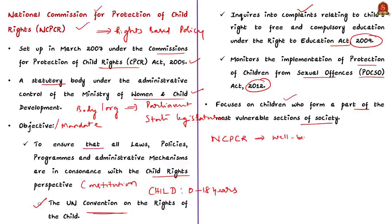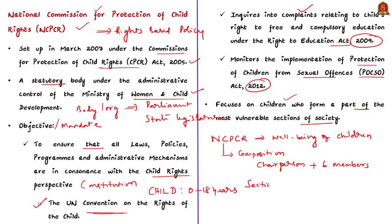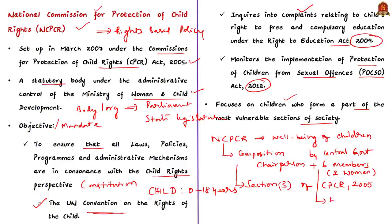For your prelims examination, also note the Commission's composition. It is a multi-member commission consisting of a chief person and six other members appointed by the central government. As per Section 3 of the Commission for Protection of Child Rights Act of 2005, the chief person is appointed by the central government and must be a person of eminence who has done outstanding work for promoting the welfare of children. Of the six other members, at least two shall be women having experience in fields such as education, child health care, child welfare, child development, juvenile justice, elimination of child labor, child psychology, or law relating to children. The Commission's office is at Delhi.